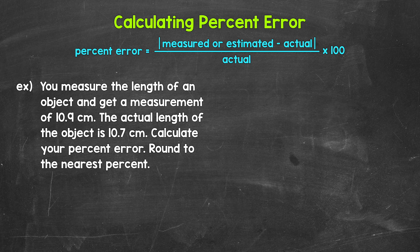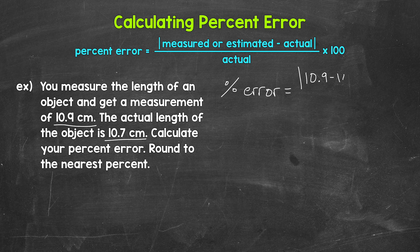So let's come over here and set this up. We have percent error equals, and now we need the absolute value of the measured value minus the actual value. The measured value is 10.9 minus the actual value of 10.7, times 100, and now we can work through this, starting with the subtraction.